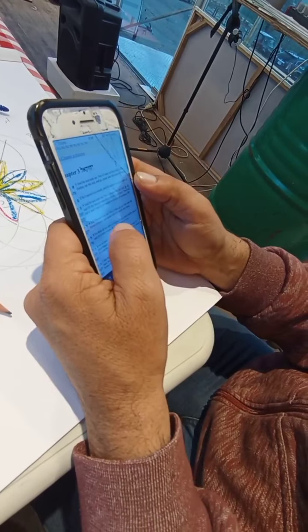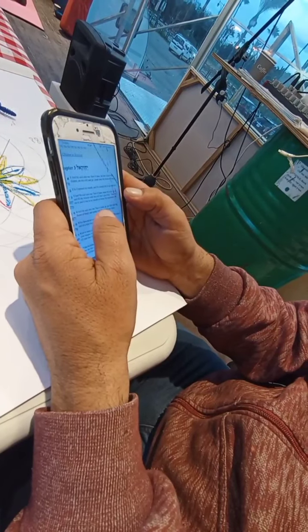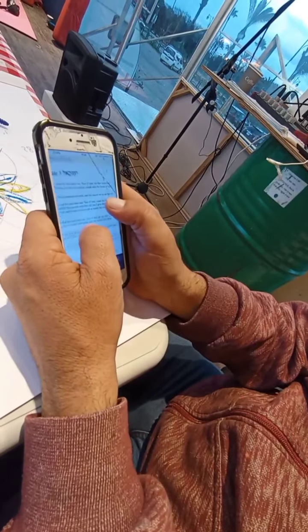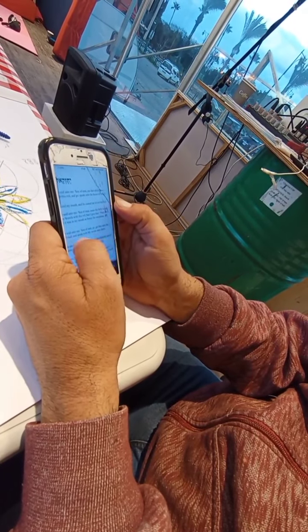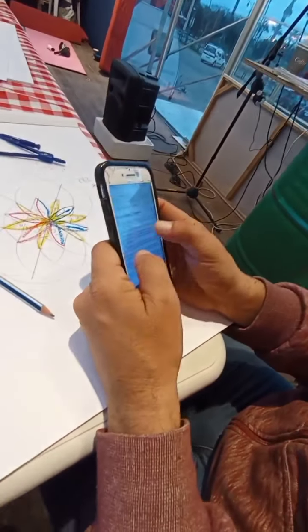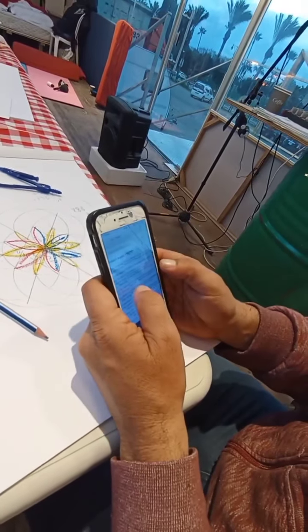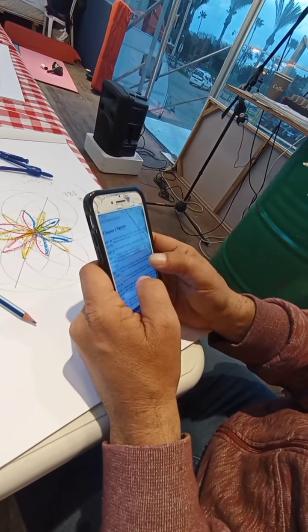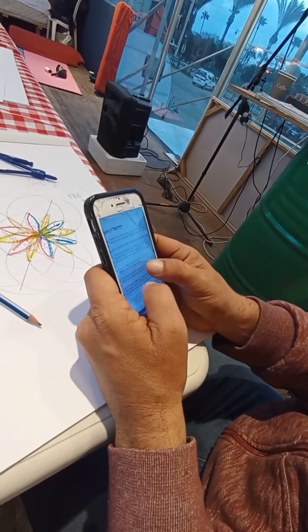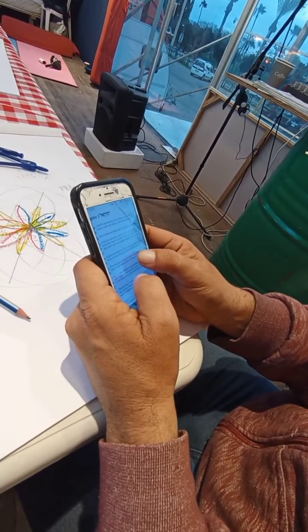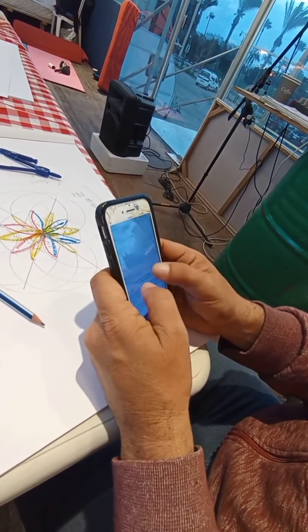And he said unto me, son of man, eat that which thou findest. Eat this roll and go speak unto the house of Israel. So I opened my mouth, and he caused me to eat that roll. You're supposed to eat that roll. This roll is when he's opened his mouth. And he said unto me, son of man, cause thy belly to eat and fill thy bowels with this roll. Then did I eat it, and it was in my mouth as honey for sweetness. And he said unto me, son of man, get thee unto the house of Israel and speak with my words unto them.